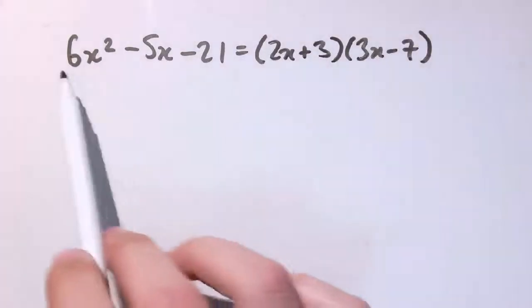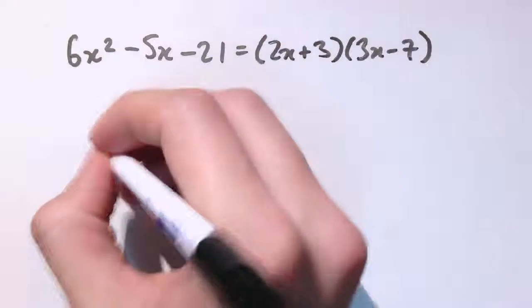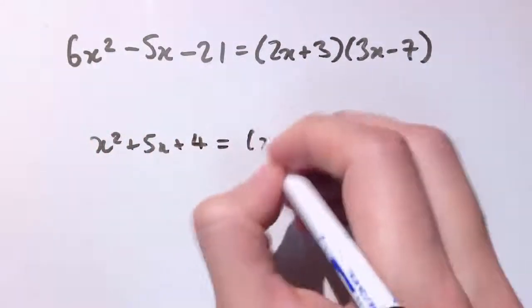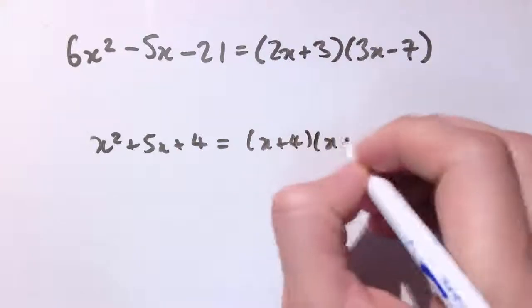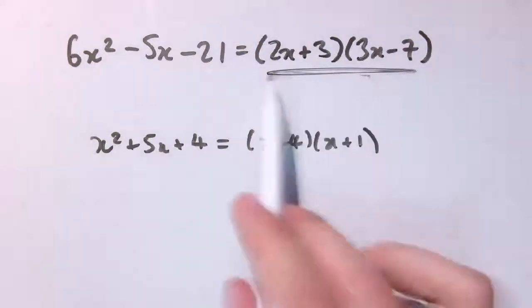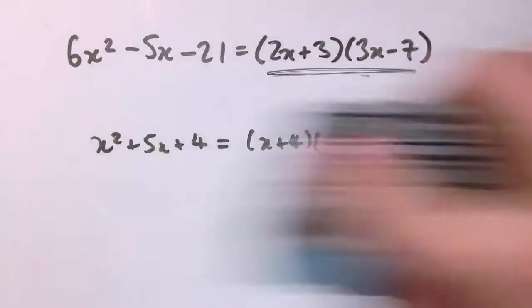Before, we said if I've got x squared plus 5x plus 4, and I can write that as (x+4)(x+1), that means minus 4 and minus 1 are roots. Similarly, if I knew that they were roots, these must be factors. So what's the equivalent thing here when I've got these sorts of expressions?